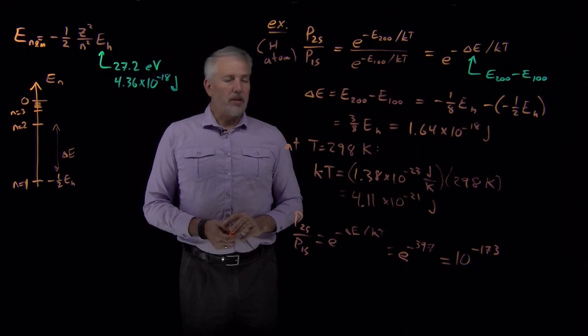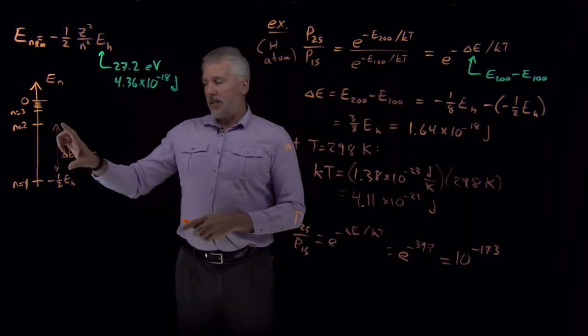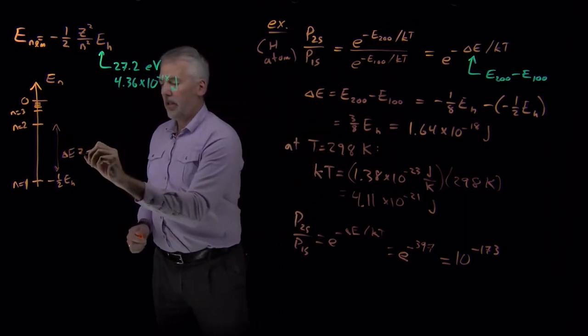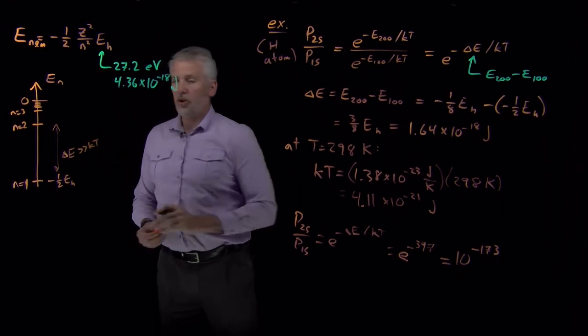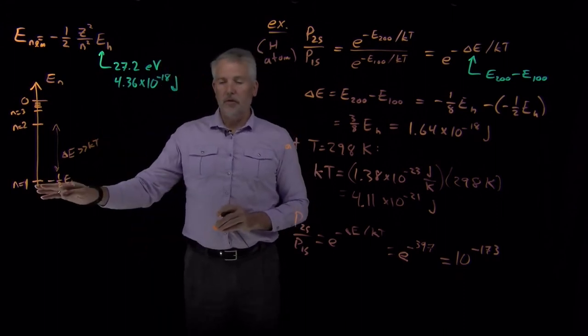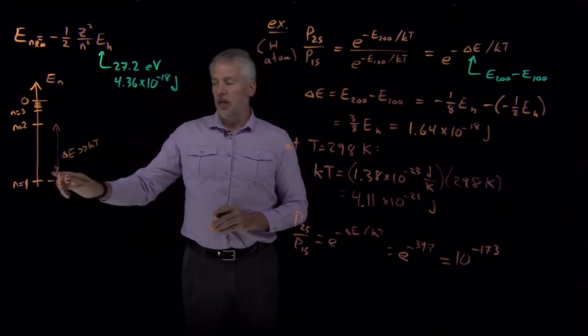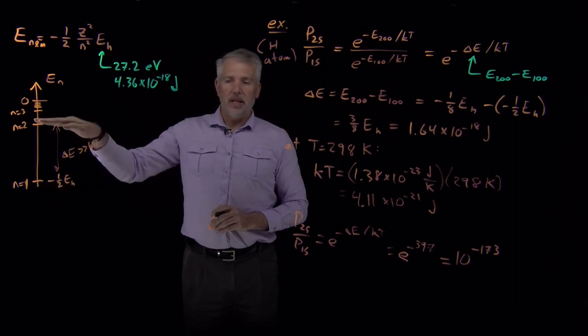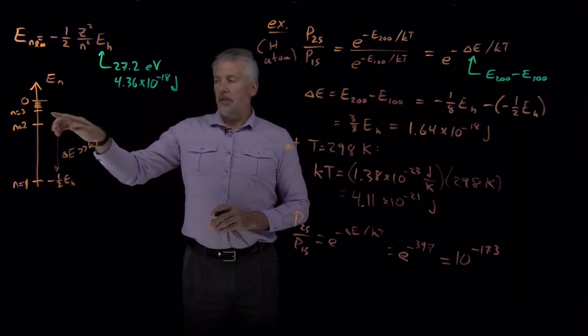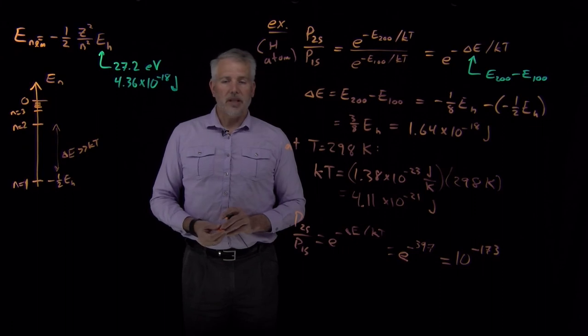Have a higher probability of being in the 1s state. So what that means is this energy difference, at least at room temperature, is so much larger than kT that essentially all of the electrons occupy the N equals 1 state. They never spontaneously find themselves in the 2s state just due to thermal excitation.